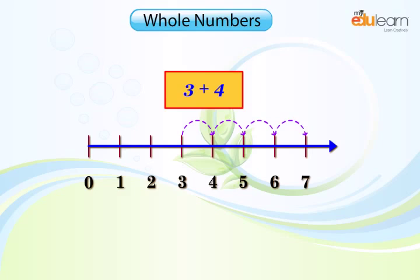The tip of the last arrow in the fourth jump is at 7. The sum of 3 and 4 is 7. That is, 3 plus 4 is equal to 7.